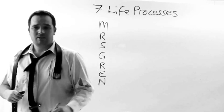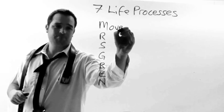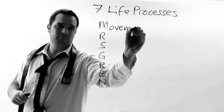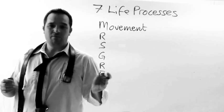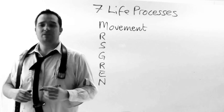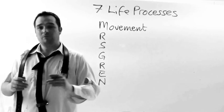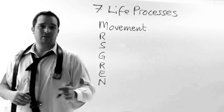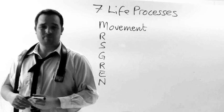The M stands for movement. If an organism moves in any way — either bodily parts or from place to place — we consider that one of the seven life processes.